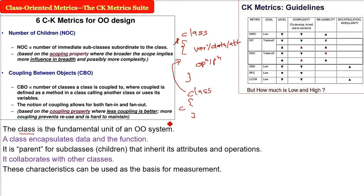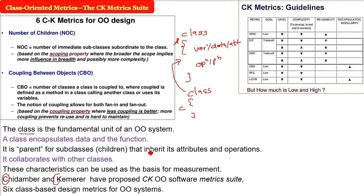So Chidambar and Kamerer, C is coming from Chidambar and K is coming from Kamerer, they have proposed CK object-oriented software metrics suite. So we will see six class-based design metrics for object-oriented systems. We will see one by one what they are saying, because there are six different in this suite.